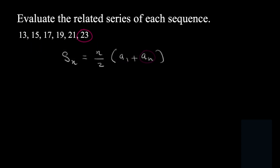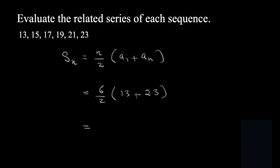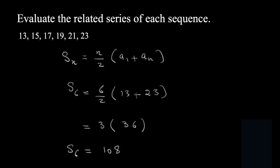In this given sequence, we have six terms. So we say it's equal to 6 over 2 into a1 which is 13, plus an which is 23. We simplify: 6 over 2 is 3, into 13 plus 23 which is 36, and we multiply 3 by 36 to get 108. We write S6 to mention that we have six terms. So S6 is equal to 108.